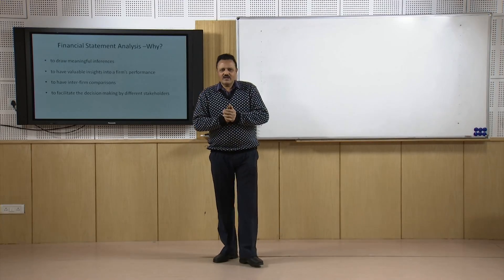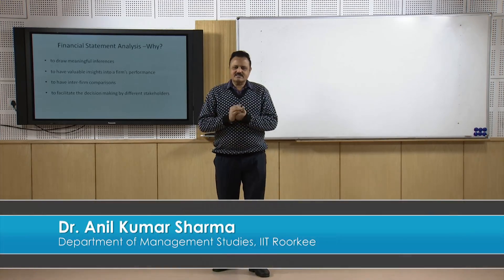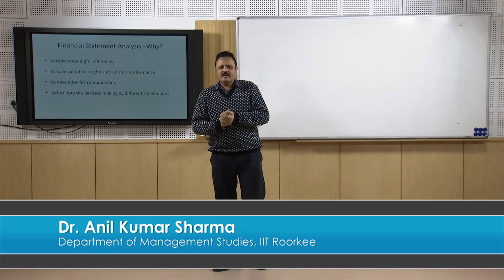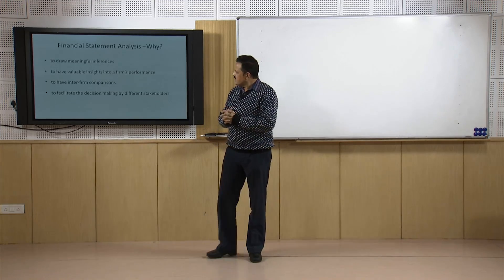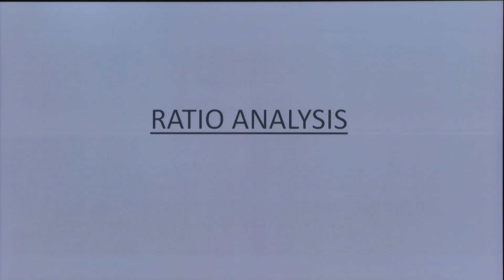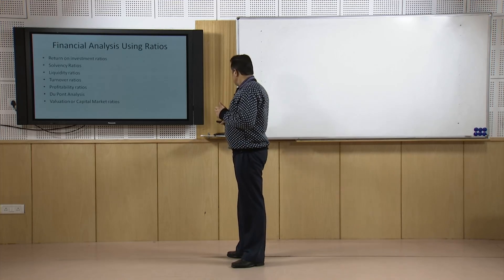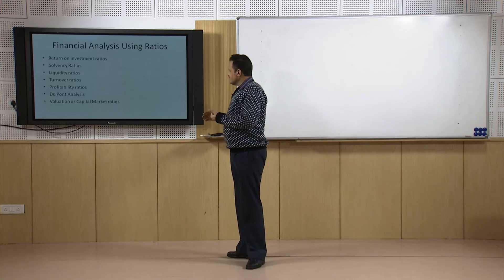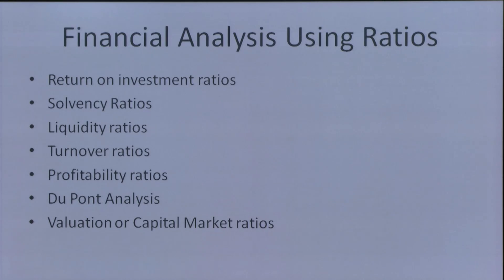Welcome students. We are in the process of discussing ratio analysis. In the last part we discussed the first category — ROI ratios — and talked about three ratios: return on net worth, earnings per share, and cash earnings per share.